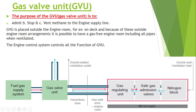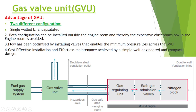Although the Gas Valve Unit is placed outside the engine room, all its functions are controlled by the Engine Control System. The Engine Control System controls the functions of the Gas Valve Unit even though it is placed outside the engine room. The Gas Valve Unit has two configurations: the first is single wall and the second is encapsulated. Both configurations can be installed outside the engine room, and thereby expensive cofferdam boxes in the engine room are avoided.